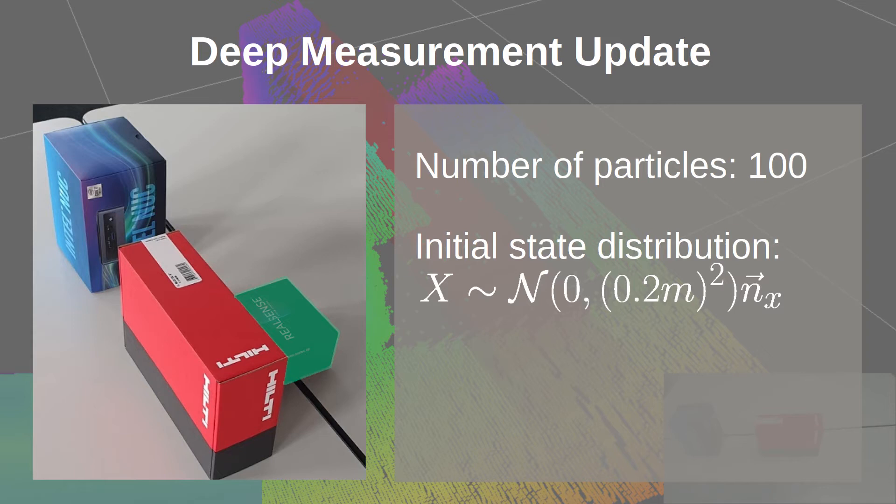In an experiment, we use a particle filter to estimate the pose of a box, highlighted in green. The box is hidden behind an obstacle and not visible to the depth sensor. A second obstacle is present in the scene. The filter is initialized with 100 particles, drawn from a normal distribution with 20 cm standard deviation in x direction.